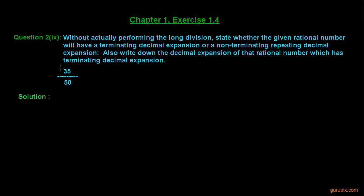Here is the 9th part of question number 2 of exercise 1.4 of chapter 1. It asks us to check whether the rational number 35/50 has a terminating decimal expansion or a non-terminating repeating decimal expansion, and also to write the decimal expansion of this rational number if it has a terminating decimal expansion.